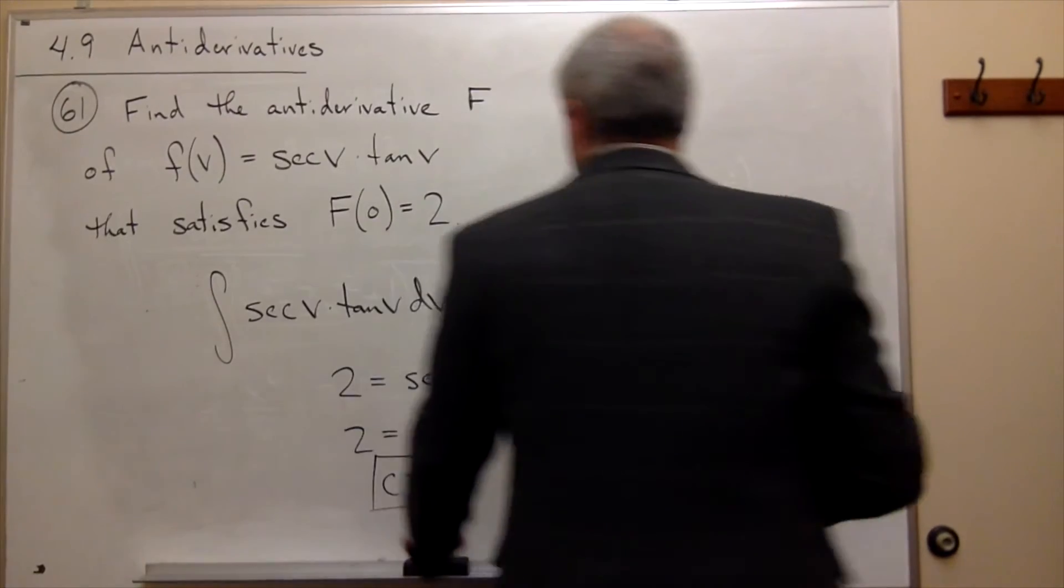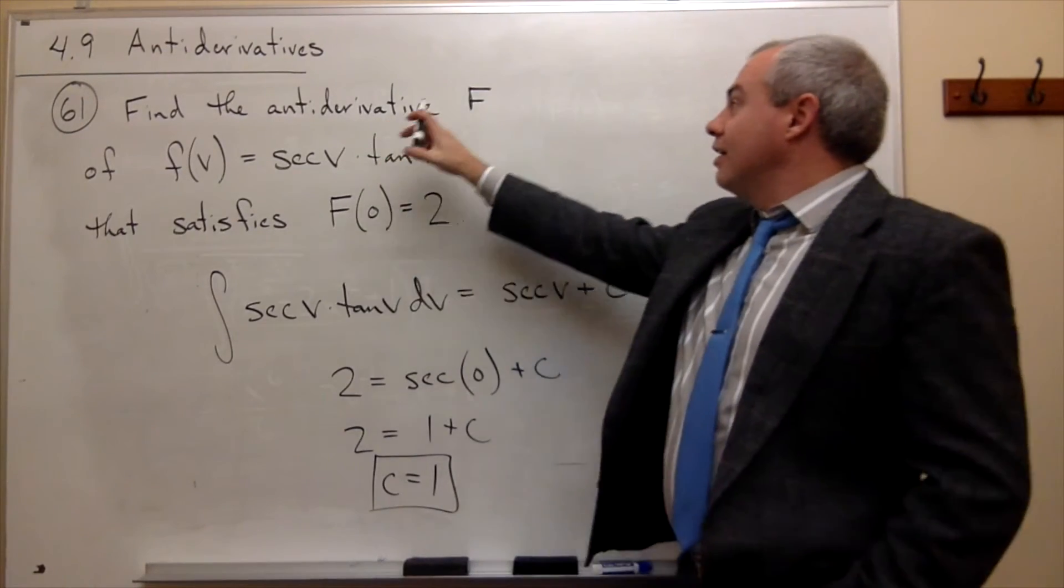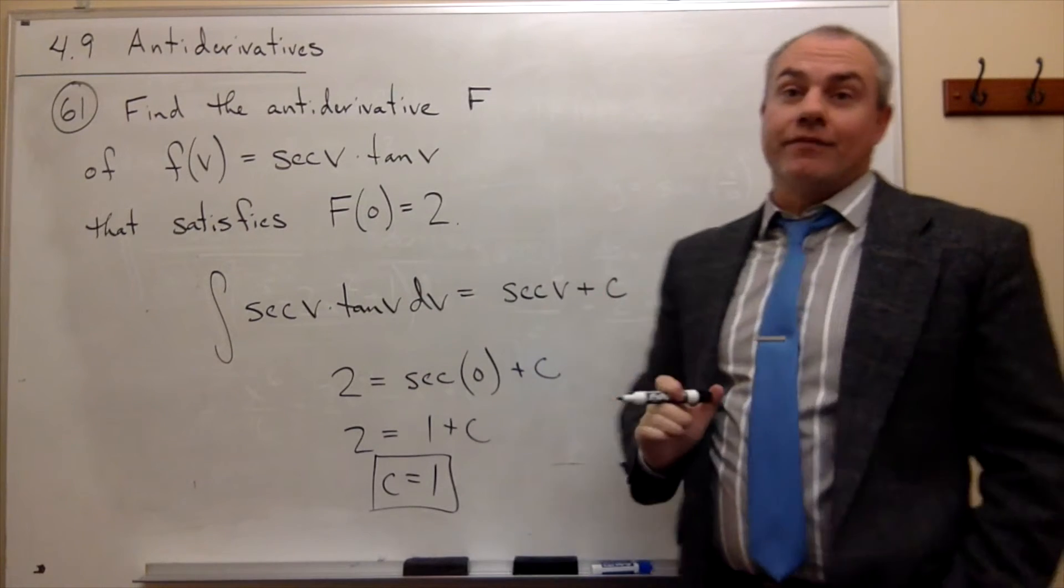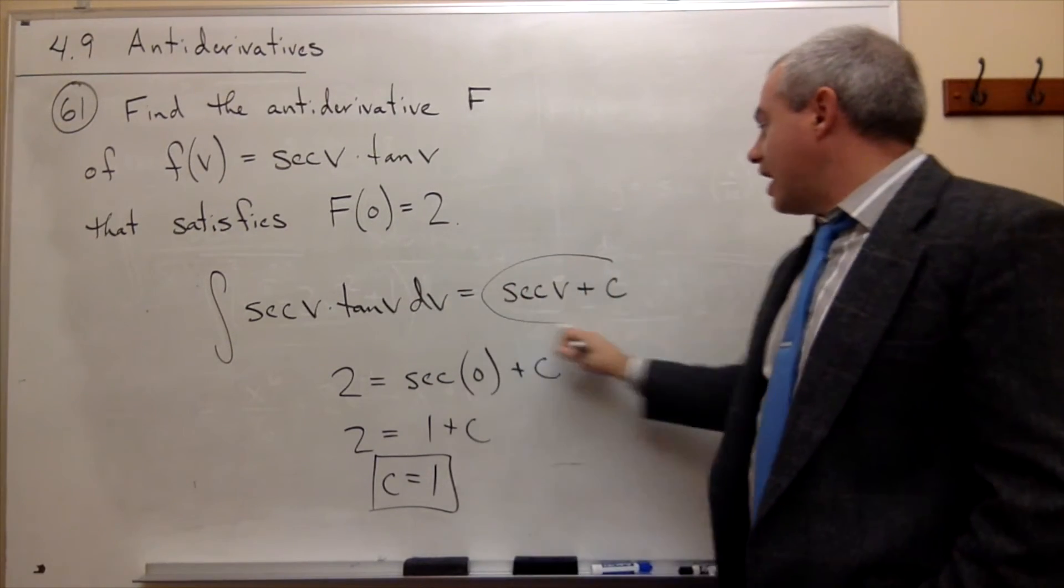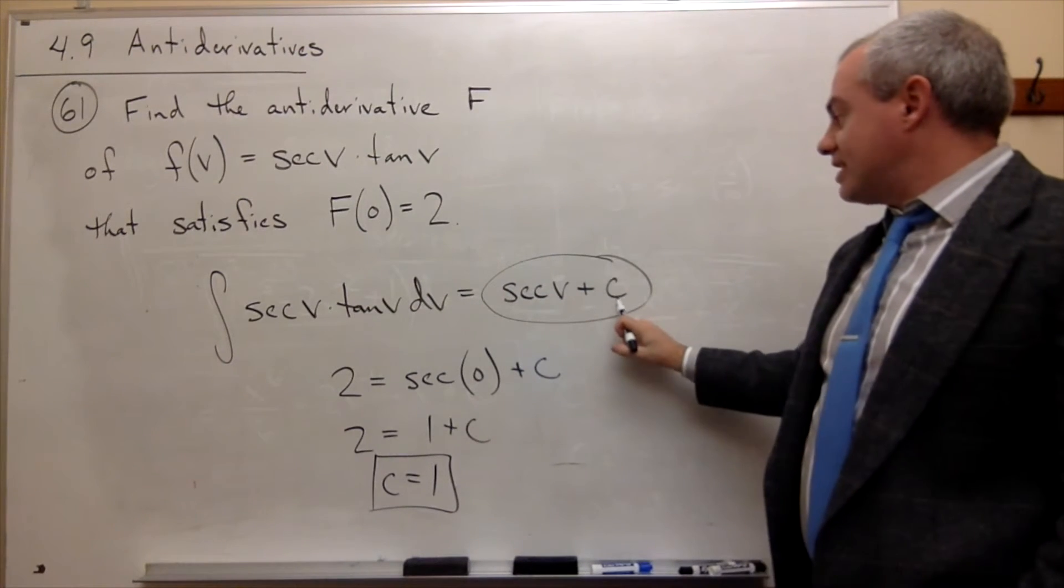Now that I know what C is, I can write the particular antiderivative that I'm looking for because I know it's going to be equal to this, except now I know what C is.